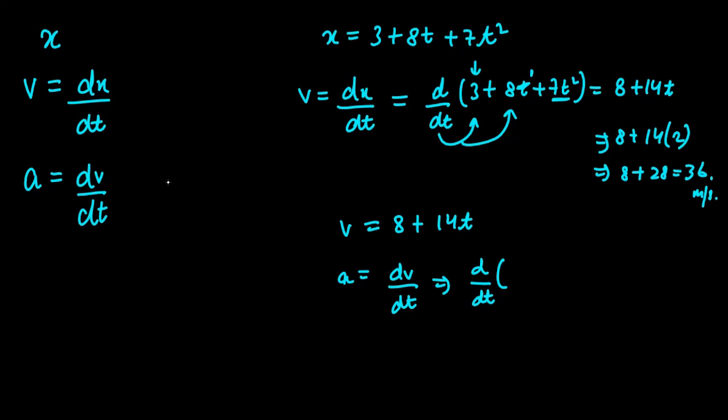So d over dt, how much value is V? 8 plus 14t. Now let's take this derivative. When it comes to the first value, then it will be 0 because it is a constant. The derivative of the second term, so it will be 14 only.